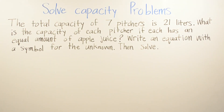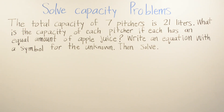In this example, the total capacity of 7 pitchers is 21 liters. What is the capacity of each pitcher if each has an equal amount of apple juice? Write an equation with a symbol for the unknown, then solve. For this example, we have to find out how much each one has, so we're going to have to divide.